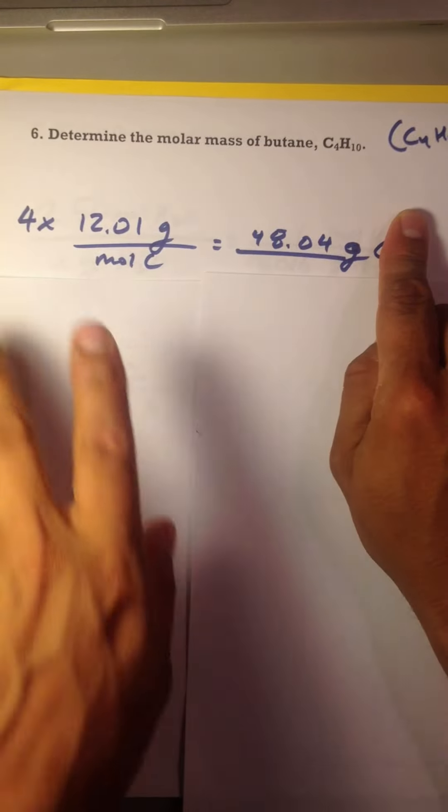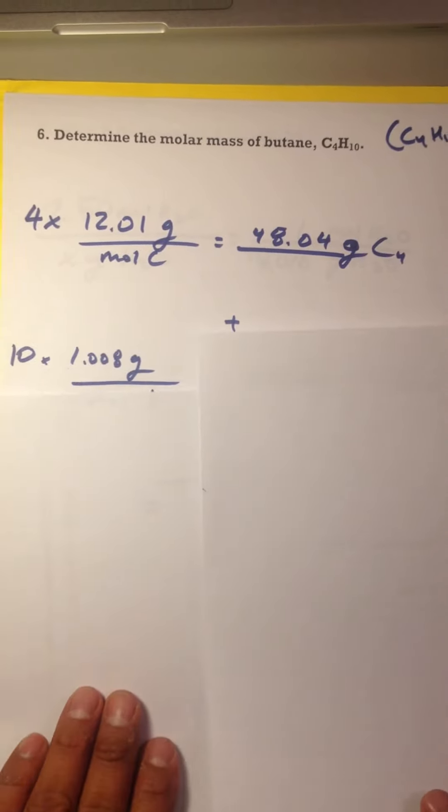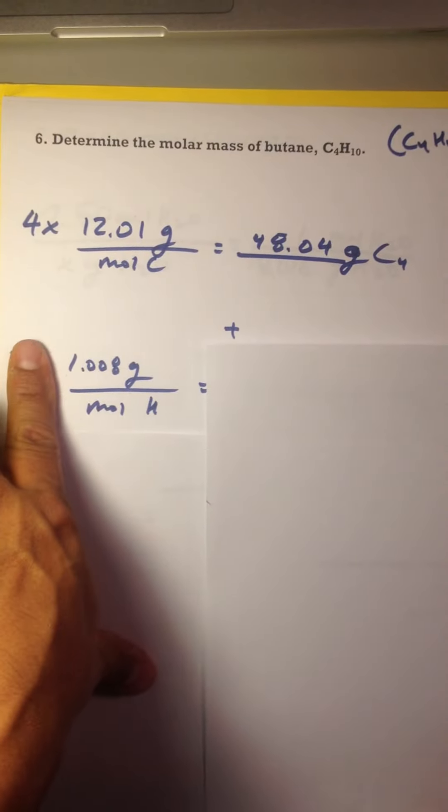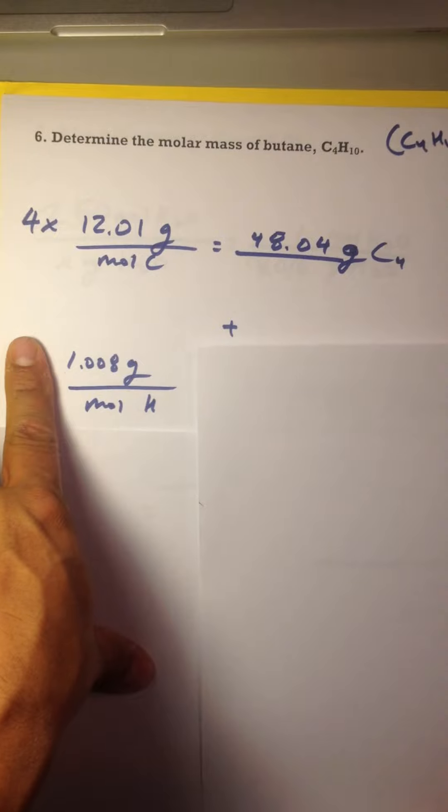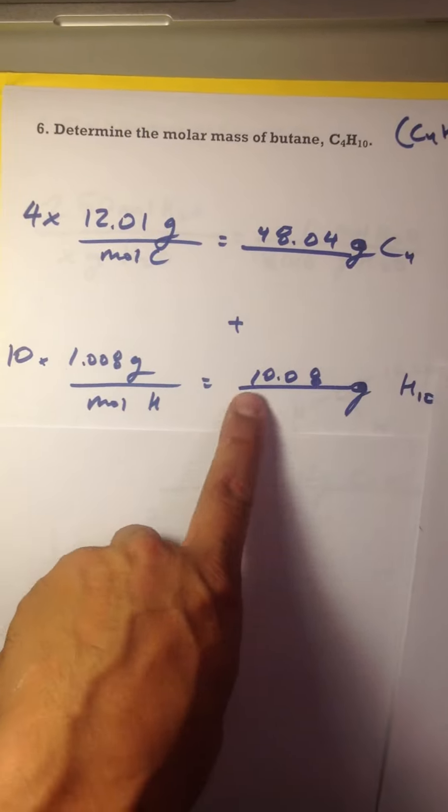Now for the hydrogen. The molar mass of hydrogen is 1.008 grams per mole of hydrogen. And we got 10 of them, so that times that equals 10.08.